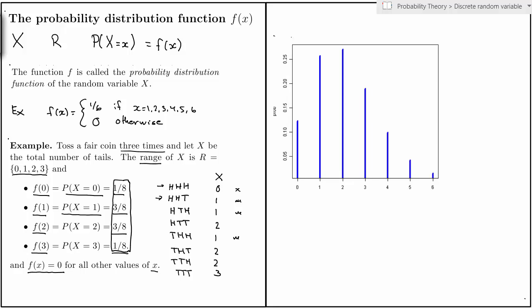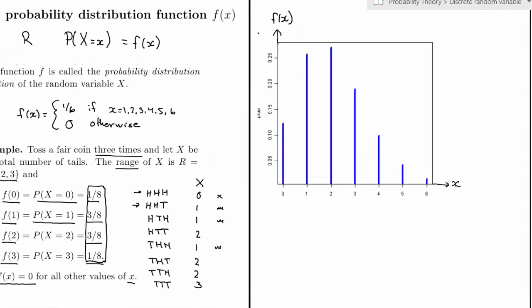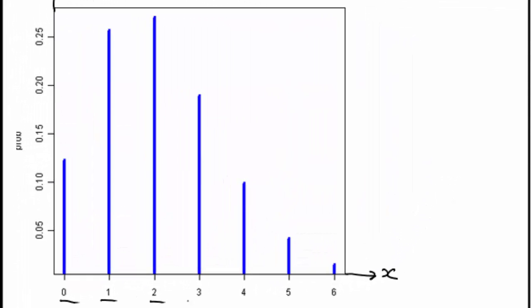It's quite common to plot the probability distribution function of a discrete random variable using a picture like this. We have x on the x-axis, and we can easily identify the range of x — there are seven different possible values for x. The y-axis measures the probability for each value of x. From this diagram we can see, for example, that the most likely value is x equal to 2, with a probability close to 30%, and the least likely value is x equal to 6, with a probability of less than 5%.